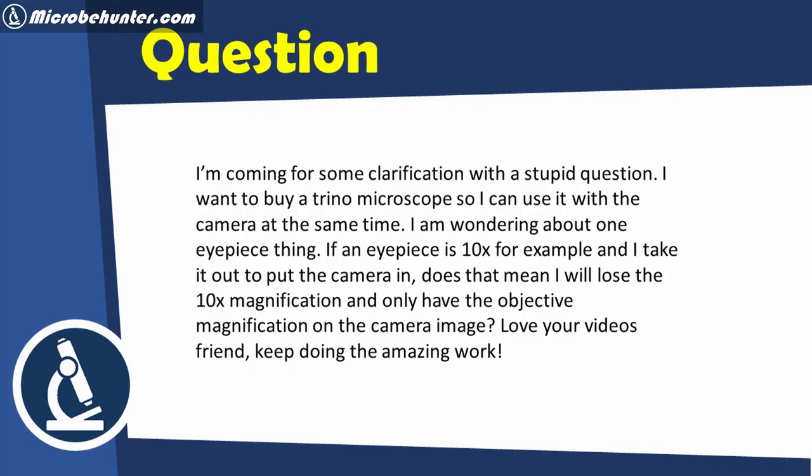I'm coming for some clarification with a stupid question. I want to buy a trinocular microscope so I can use it with the camera at the same time. I'm wondering about one eyepiece thing. If an eyepiece is 10 times magnifying, for example, and I take it out and put the camera in, does that mean I will lose the 10 times magnification and only have the objective magnification on the camera image?